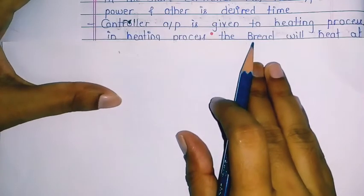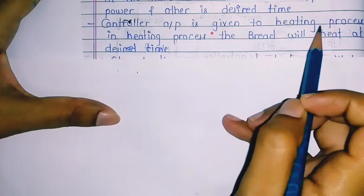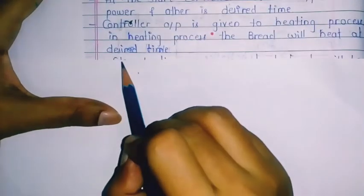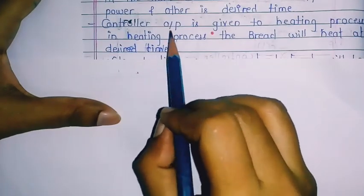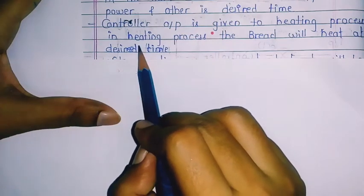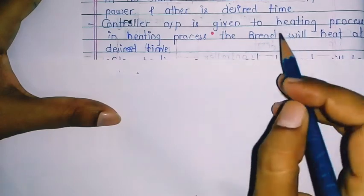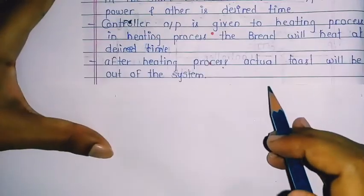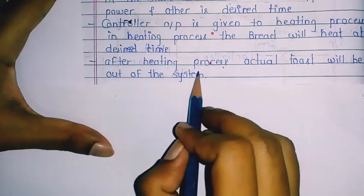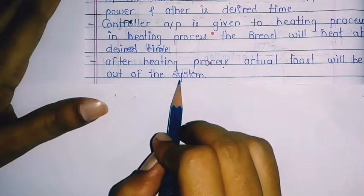Next point: the controller output is given to the heating process. In the heating process, the bread will heat at the desired time — the controller output is provided to the heating process. After the heating process, the actual toast will come out of the system.